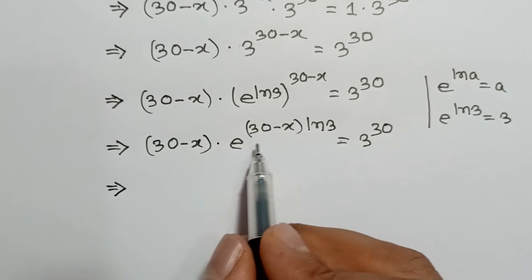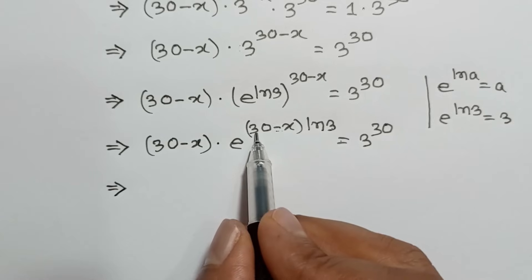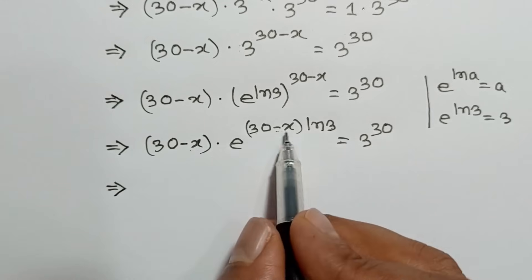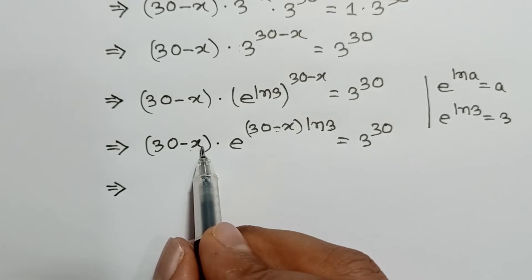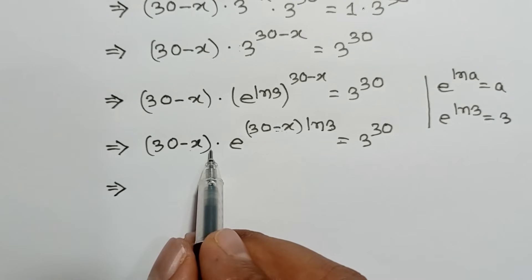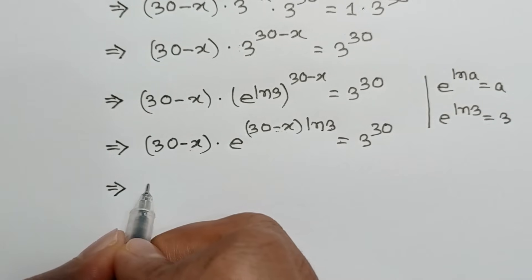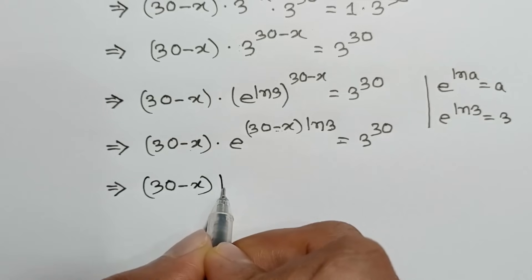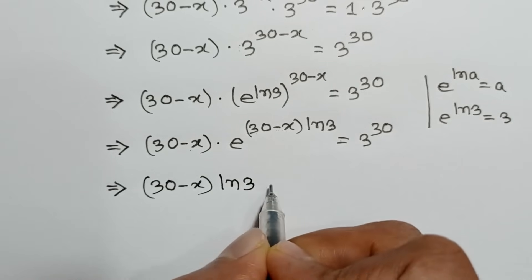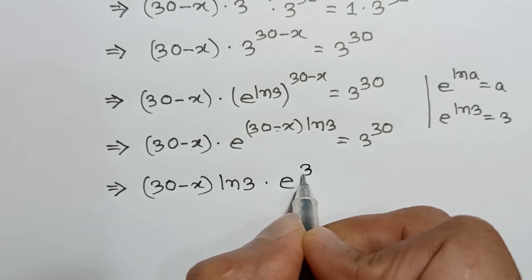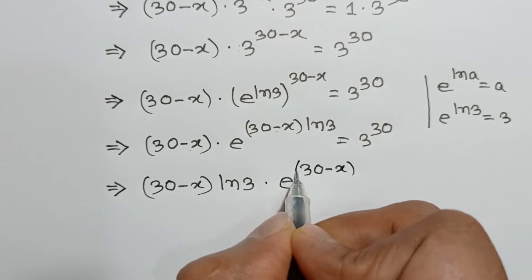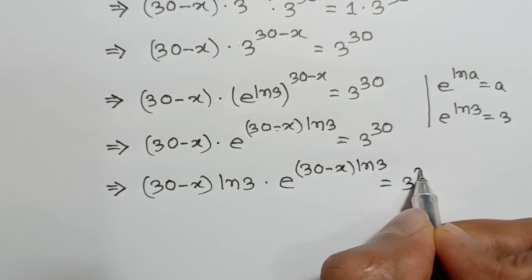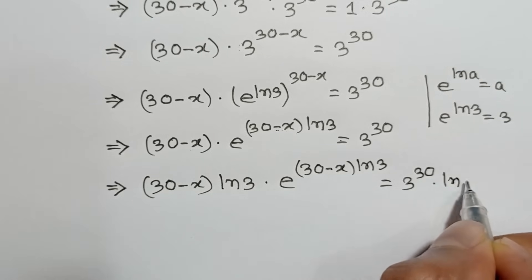The exponent is 30 minus x times ln of 3 and the coefficient is 30 minus x. To make these two equal, we will multiply both sides by ln of 3. So multiplying both sides by ln of 3, we will get 30 minus x times ln of 3 times e to the power 30 minus x times ln of 3 is equal to 3 to the power 30 times ln of 3.